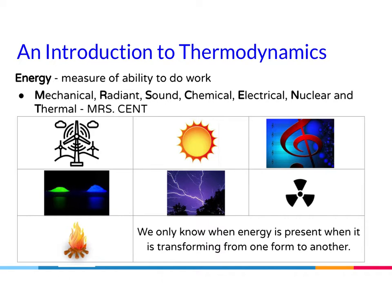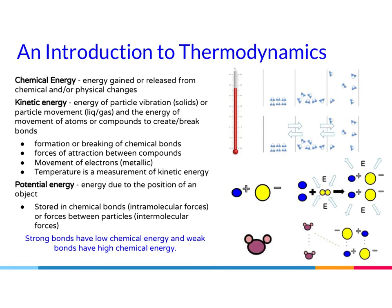We only know when energy is present when it is transforming from one form to another. So, as scientists, we look at the measurement of what's happening as we transform from one form of energy to another. Since this is pre-AP chemistry, we're going to focus a lot in this unit on chemical energy and the change that occurs during chemical reactions and physical changes.